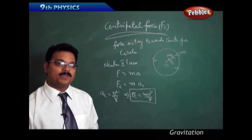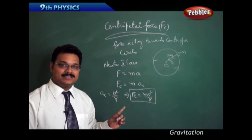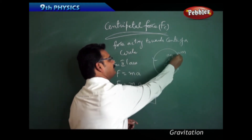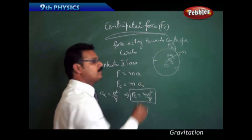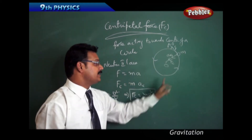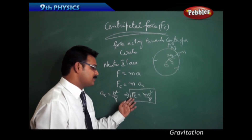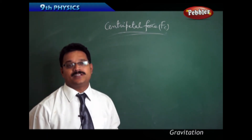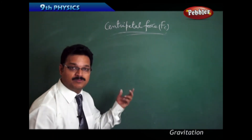In uniform circular motion, velocity is tangential to the circular path, displacement is also tangential, but acceleration always points towards the center of the circle. Similarly, centripetal force also acts towards the center, and its formula is FC equals MV squared by R. There are many applications of centripetal acceleration and centripetal force.